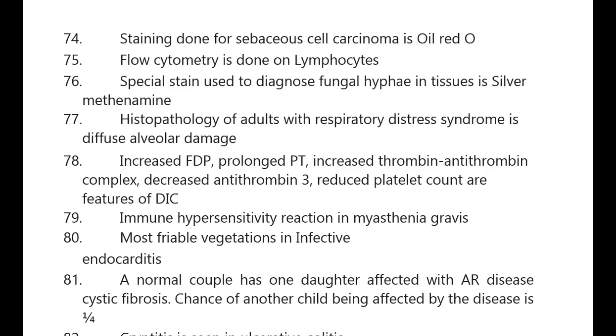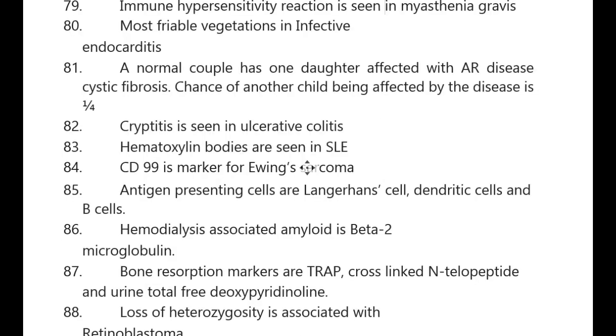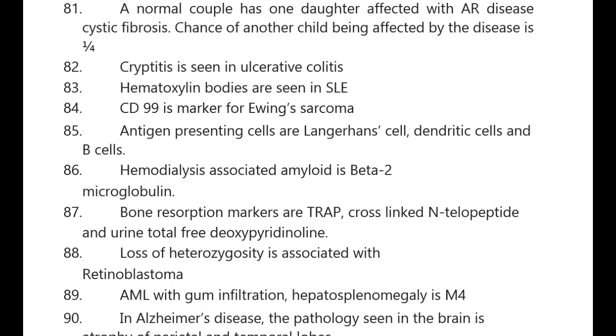Histopathology of adult respiratory distress syndrome is diffuse alveolar damage. Increased FDP, prolonged PT, increased thrombin-antithrombin complex, decreased antithrombin 3, and reduced platelet counts are features of DIC. Immune hypersensitivity reaction is seen in myasthenia gravis. Most friable vegetations are seen in infective endocarditis.